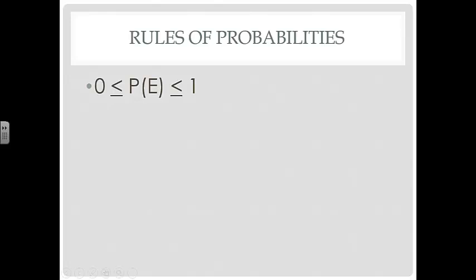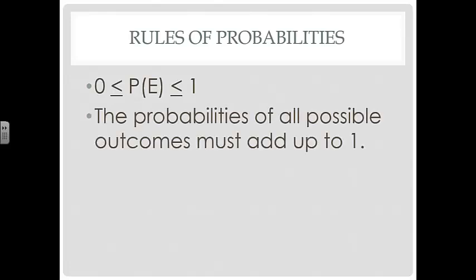And then you can't have a probability of greater than 1, okay? It can equal 1. You can be 100% sure that that's going to happen. But it has to be in between 0 and 1. And then also, all the probabilities of all the possible outcomes must add up to 1.